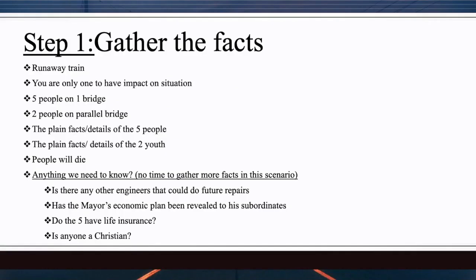Here are some facts on the screen. These are objective facts — what we know about the story. You're the only one who has an impact on the situation. There are five people on one bridge and two people on the other bridge. The screen also shows the plain facts and details of the five people and the two youth. We know that people will die — no matter what choice you make, people will die.